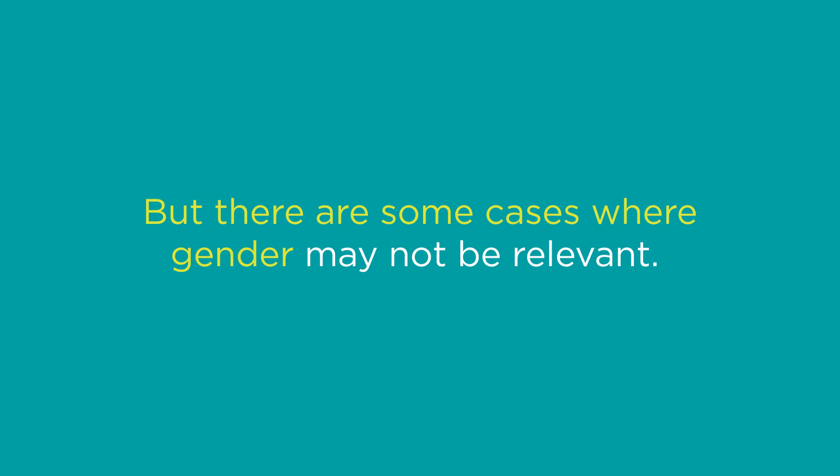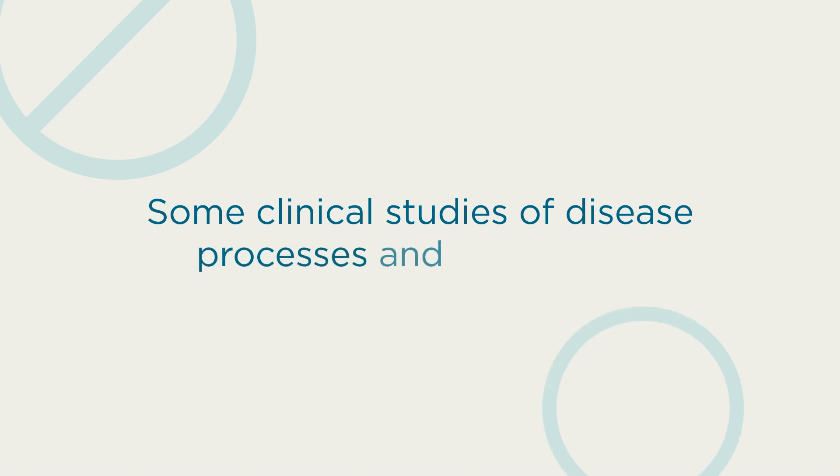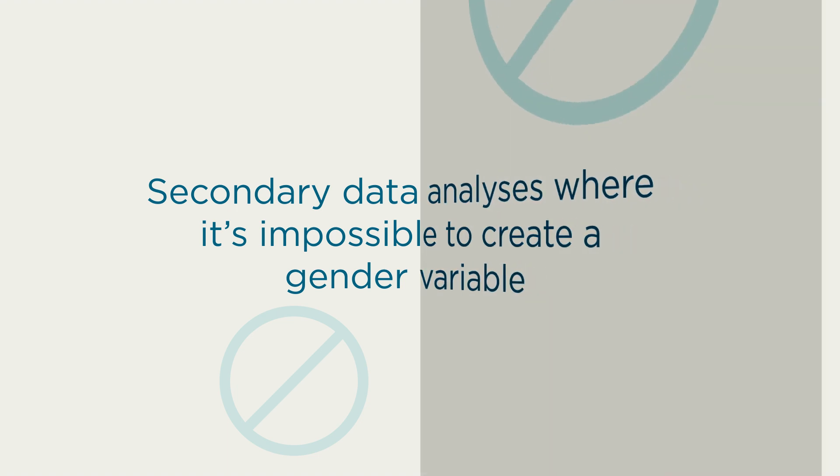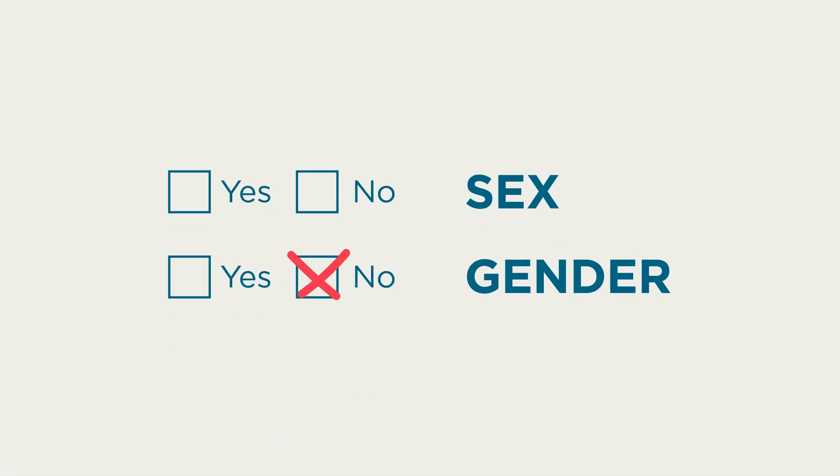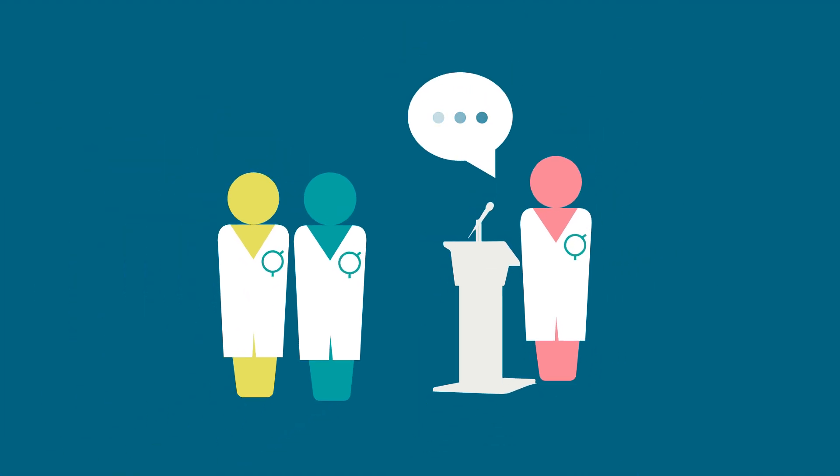But there are some cases where gender may not be relevant. Examples might include some clinical studies of disease processes and treatments, certain single sex studies that use existing datasets, or secondary data analyses where it's impossible to create a gender variable. Remember, applicants who don't integrate gender must justify why it's not possible or relevant.